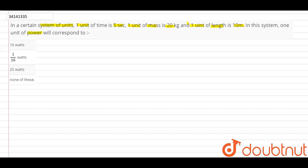Fine, as you know, according to the question: m' equals 20m, l' equals 10l, and t' equals 5t.